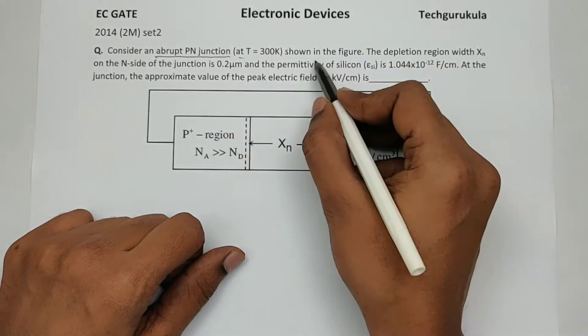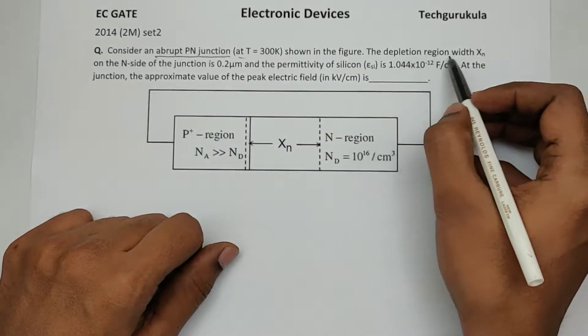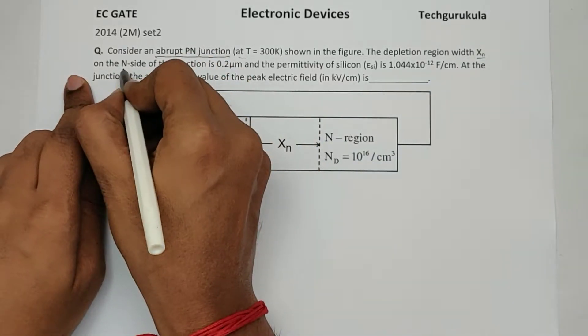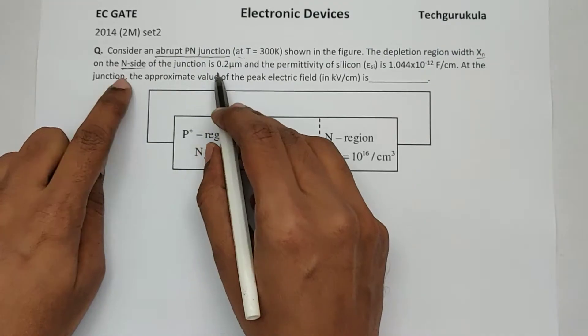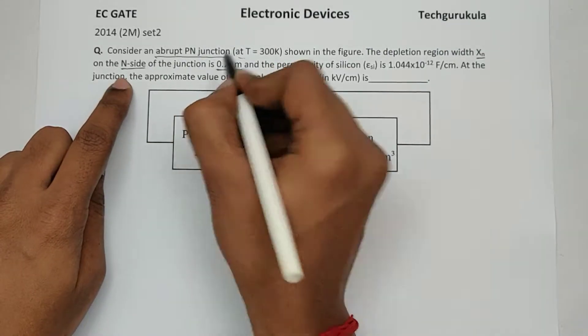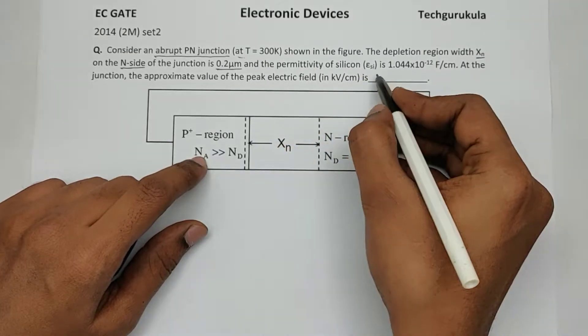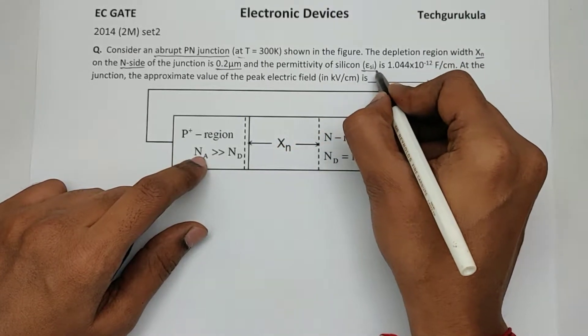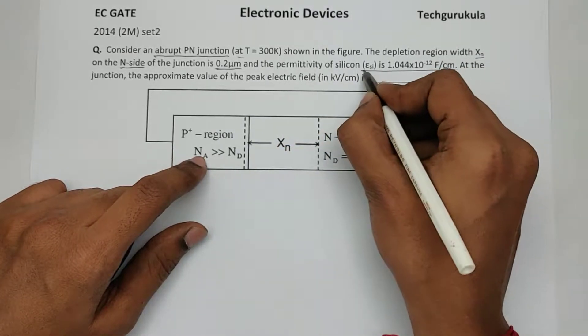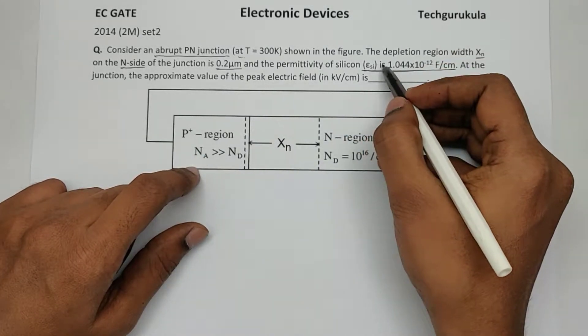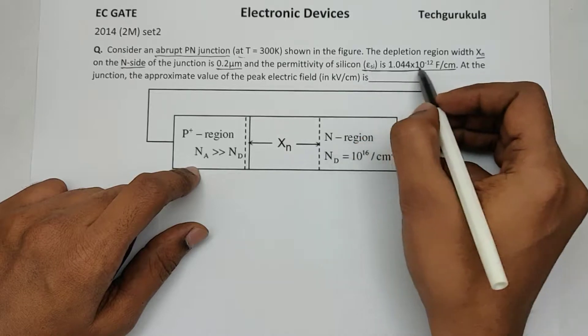Shown in the figure, the depletion region with X_n on the n-side of the junction is 0.2 micrometers. So the depletion width on the n-side is given. And the permittivity of silicon is given which is this value: epsilon_si is equal to epsilon_naught times epsilon_r_si. The entire value is given.